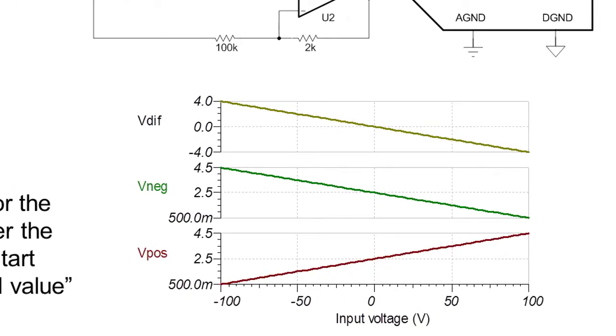This graph shows that for an input of negative 100 volts, the differential output is positive 4 volts. And for an input of positive 100 volts, the differential output is negative 4 volts.